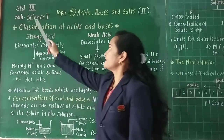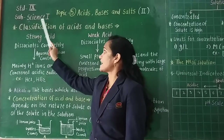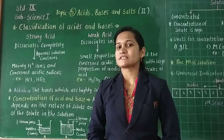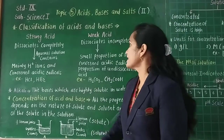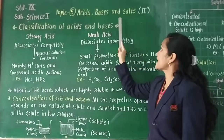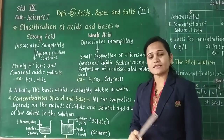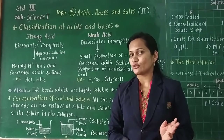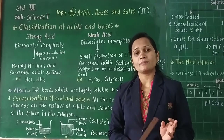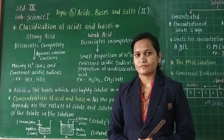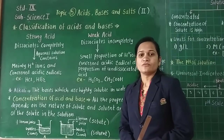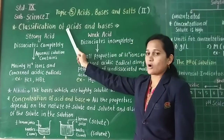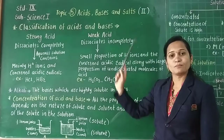Hi students, Standard 9, Subject Science 1. Last lecture, we already started our lesson number 5 — Acids, Bases and Salts. In that, we already studied about the dissociation of ionic compounds and the Arrhenius Theory. Today we are going to start the next point: Classification of Acids and Bases.